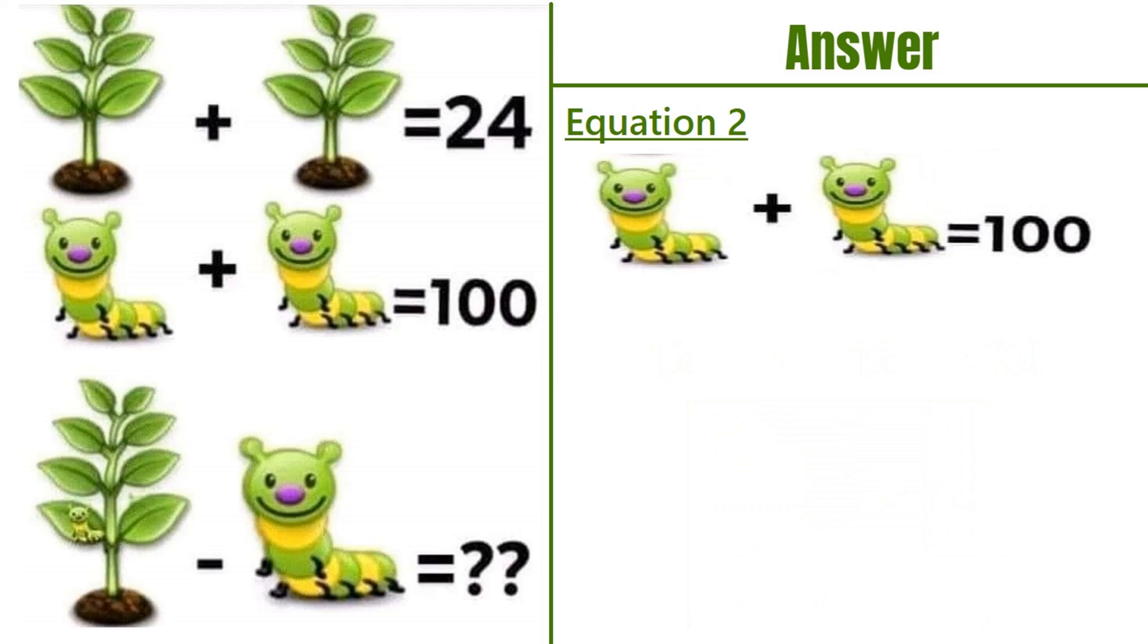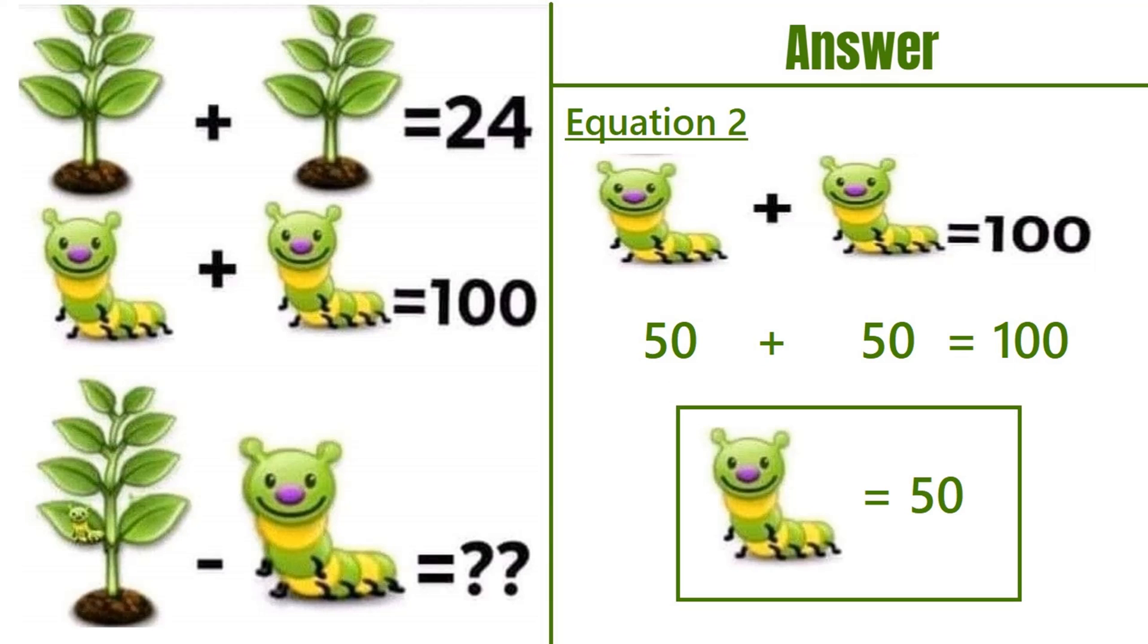Moving on to equation number 2, we have a caterpillar plus a caterpillar equals 100. 50 plus 50 equals 100, so a caterpillar equals 50.